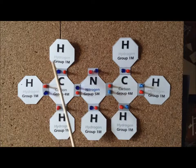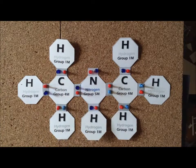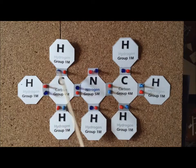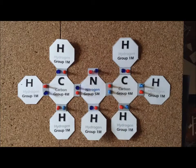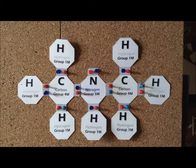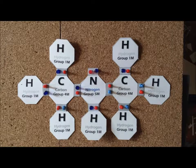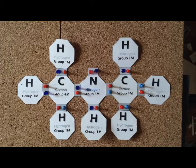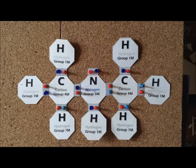And we notice that we can satisfy the duet rule for each of the hydrogens and the octet rule for carbon and nitrogen. And notice that we still have a lone pair on nitrogen. The electron releasing effect of two methyl groups is even greater than the effect for one methyl group. Therefore, dimethyl amine is an even stronger base than methyl amine is.